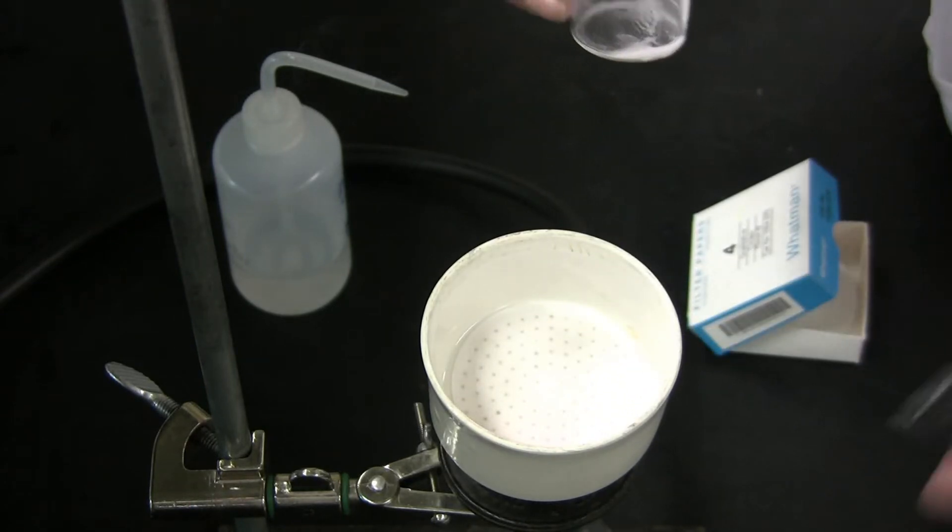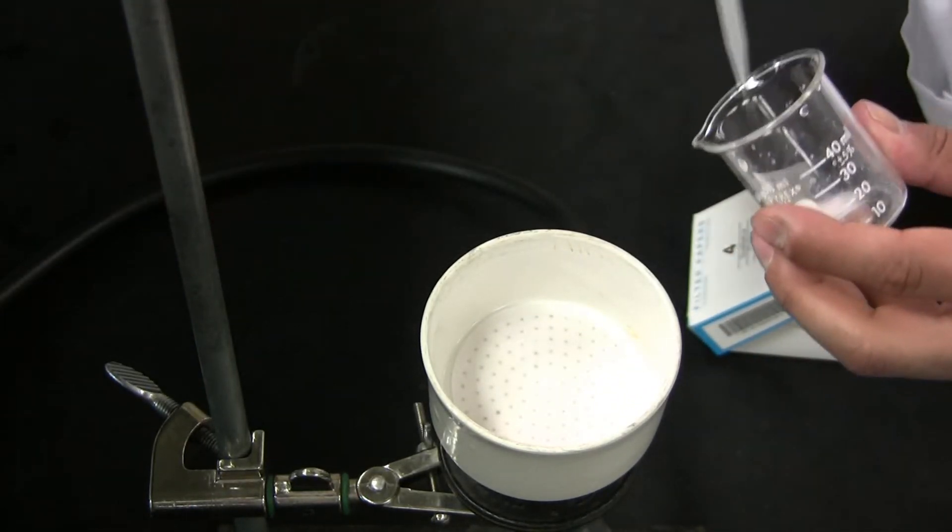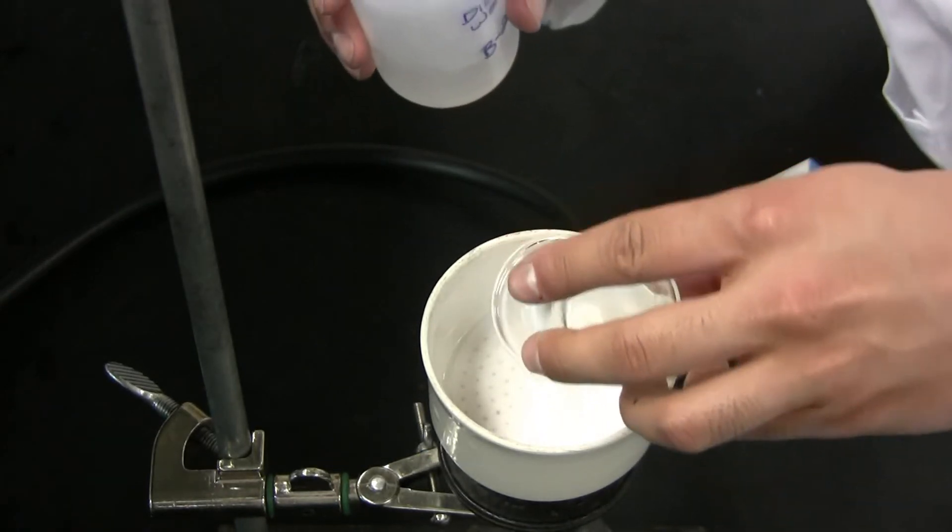For the remaining solids inside the beaker, add some of your solvent and then pour this gently into the Buchner funnel.